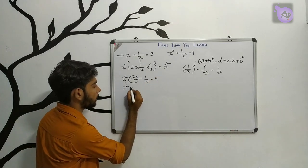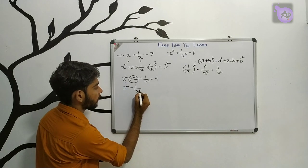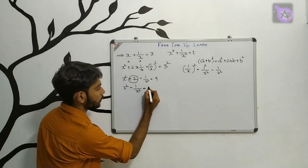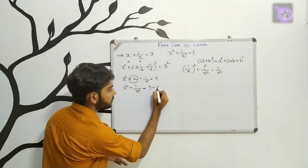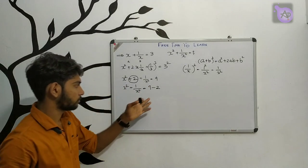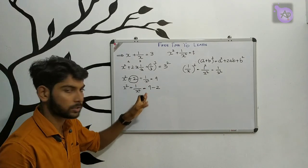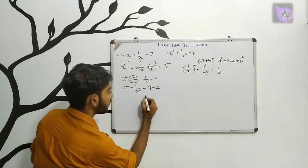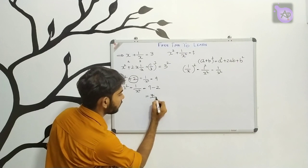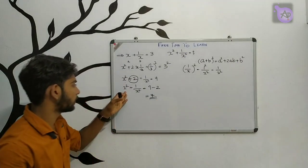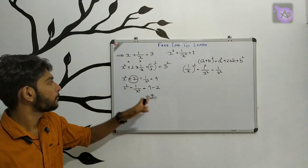Therefore, x squared plus 1 by x squared equals 9 minus 2, which equals 7. So x squared plus 1 by x squared equals 7.